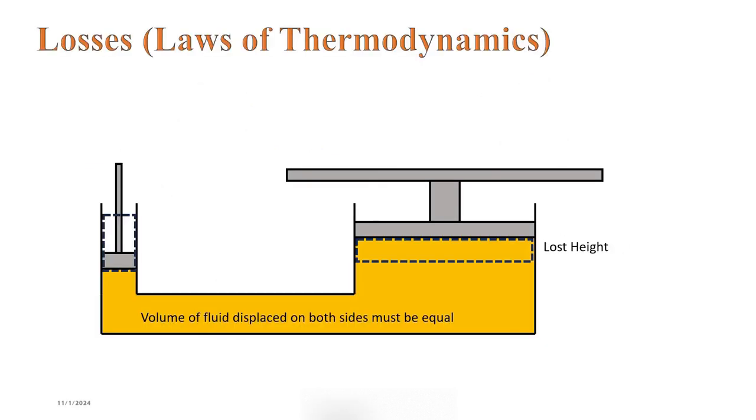There is a loss, however. For incompressible fluid, the volume of fluid displaced on both sides must be equal. This implies that the piston on the larger side will rise by a smaller height compared to the smaller piston. This means that we have smaller piston movement on the output side.